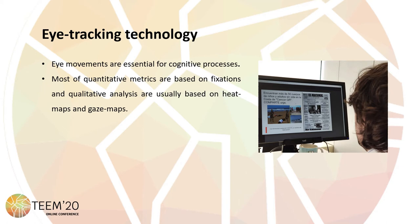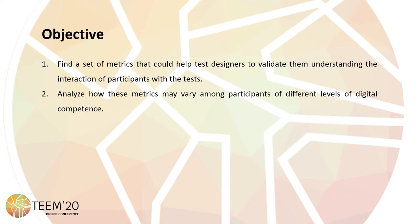Eye movements are essential for cognitive processes, and most quantitative metrics are based on fixations while qualitative analyses are usually based on heat maps and gaze maps. The objective of the study was to find a set of metrics that could help test designers to validate them, understanding the interaction of participants with the tests, and to analyze how these metrics can vary among participants of different levels of digital competence.